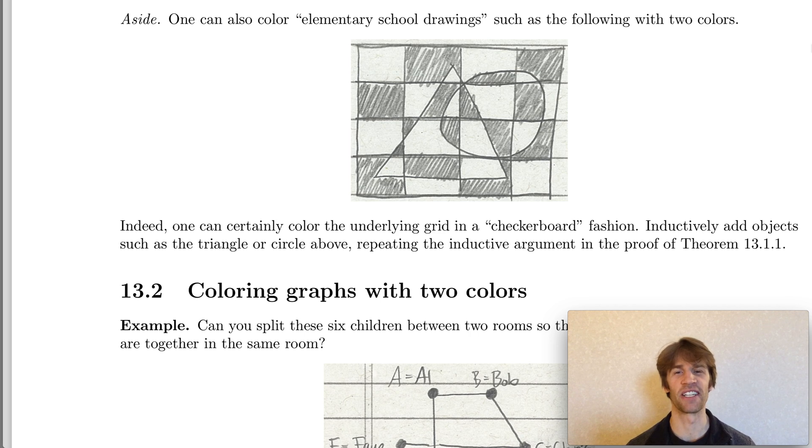And the aside I wanted to make here is that you can use a similar proof technique to prove that any such drawing can be drawn with only two colors. The way you do this is that you color the background grid alternating white and dark colors, and then as you inductively add on one more shape or one more shape, you repeat the inductive argument that we just gave for circles in the plane. Thanks!